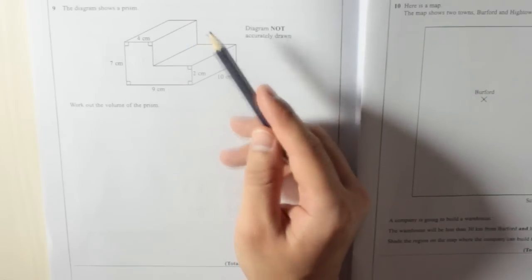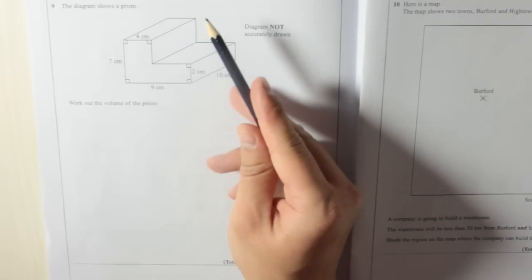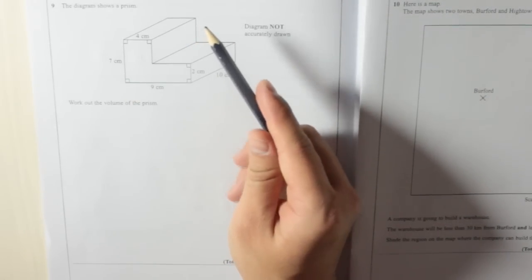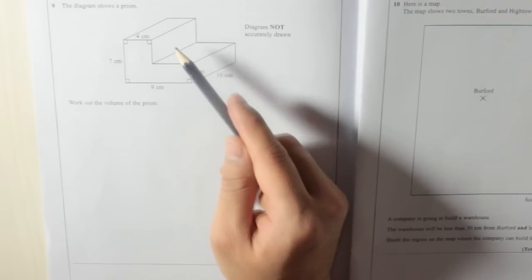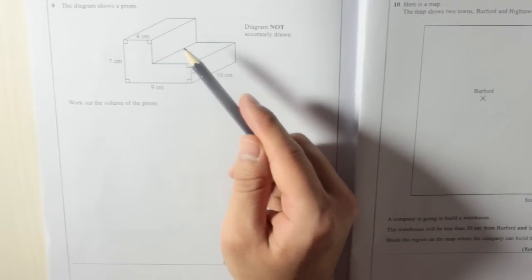For example, a Toblerone box has a triangle going all the way through it, so the cross section of a Toblerone box is a triangle. The cross section of a Pringles box would be a circle.